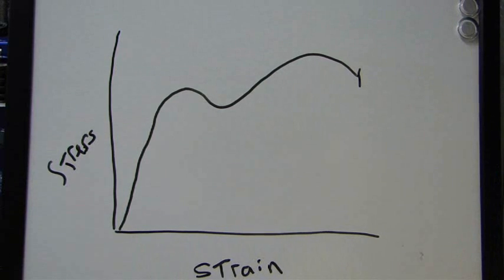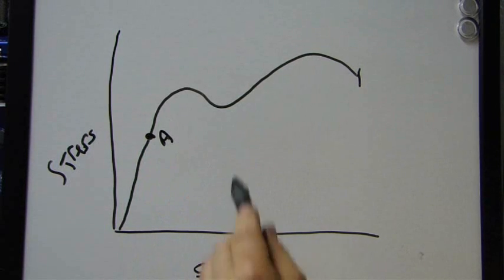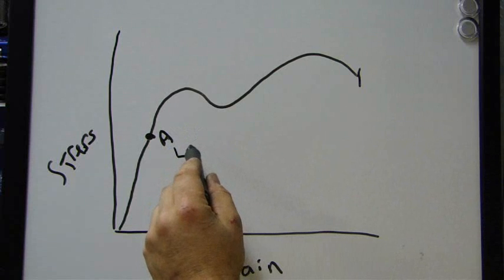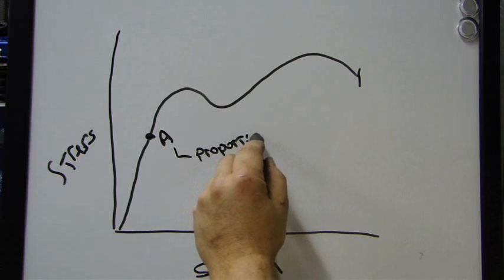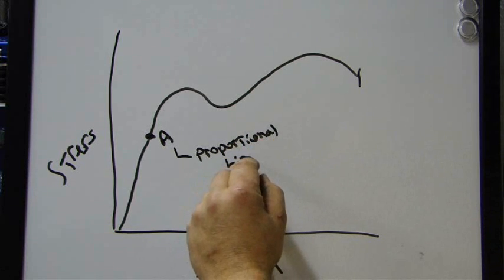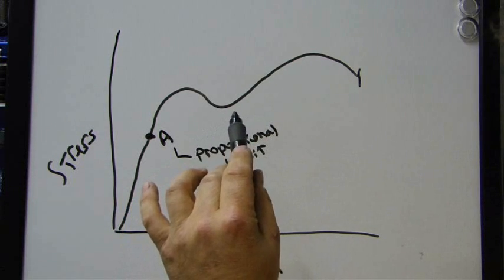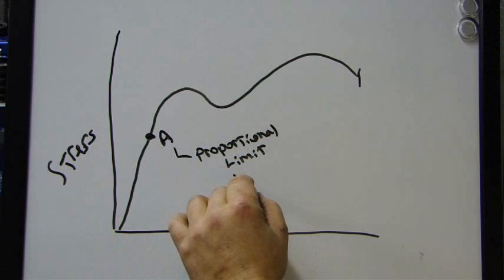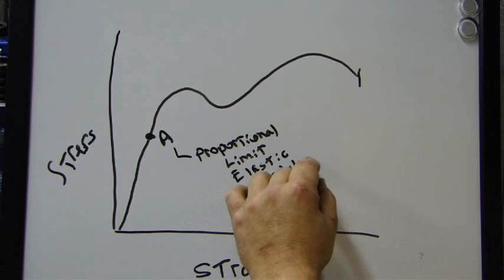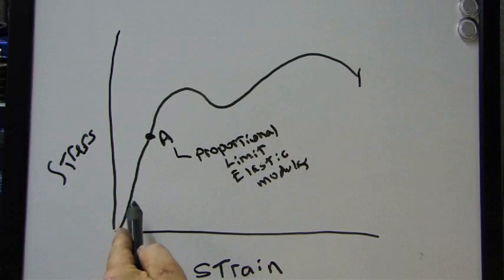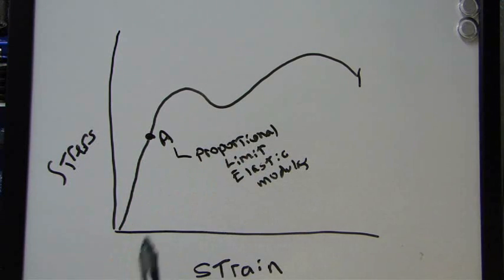Now, there are a couple points that are critical on this curve. The first one is this. We're going to call this A. The A-point, this right here, is referred to as the proportional limit. Proportional limit. That is also known as, very simply, the elastic modulus, elastic modulus, or the ratio of stress to strain. Stress to strain, so we have a slope of a line, and that's definitely, just simply our proportional limit.